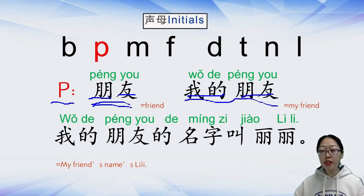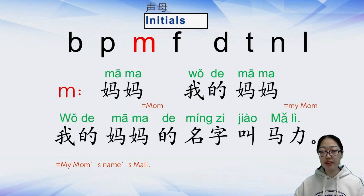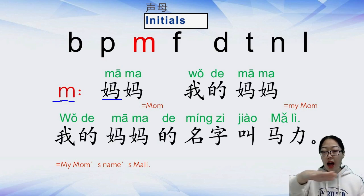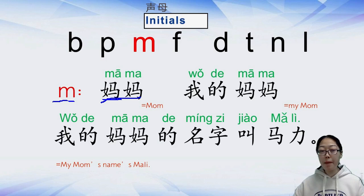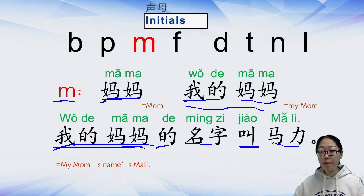我的朋友 — my friend. 妈 (mā) — 妈妈, which means 'mom.' 我的妈妈 means 'my mom.' 我的妈妈的名字叫玛丽 — my mom's name is Mary.